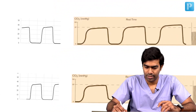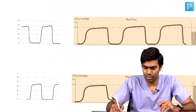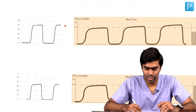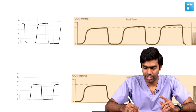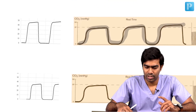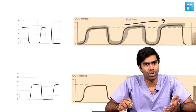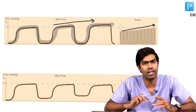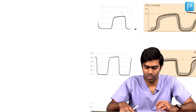Here is another example. What I'm trying to show is that the EtCO2 is actually increasing. This image again is an intentional depiction of that EtCO2 increase, but sometimes these subtle changes you may not be able to pick up. That is why we have the trend, where you can see the EtCO2 is actually gradually increasing.